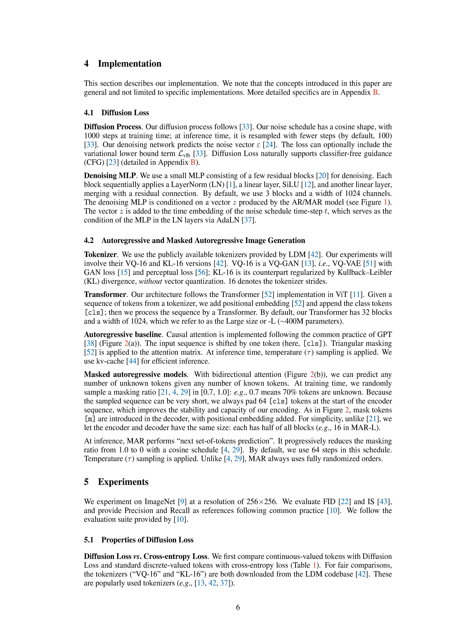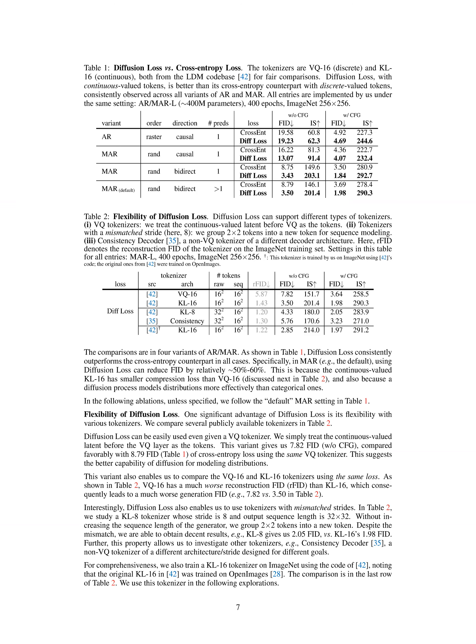The proposed method has several limitations and drawbacks, especially in terms of scalability, complexity, and applicability in different domains. Firstly, the method relies on a denoising MLP for diffusion loss, which can introduce complexity and computational overhead, particularly as the width of the MLP increases. While increasing the width of the MLP can improve generation quality, it also adds to the model's complexity and may require more parameters. Additionally, the diffusion process involves training with a 1,000-step noise schedule, which may be computationally intensive and could limit scalability, especially when applied to larger datasets or more complex tasks.